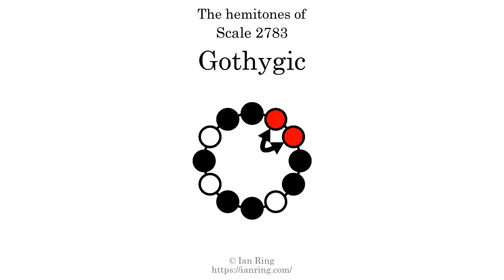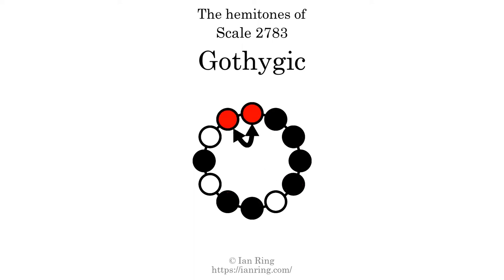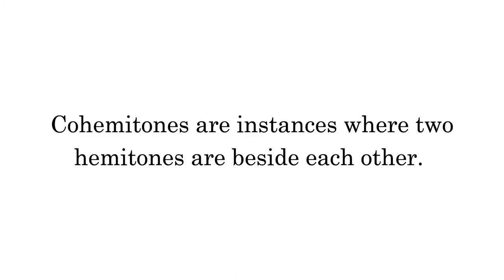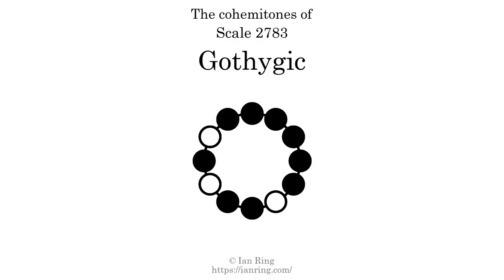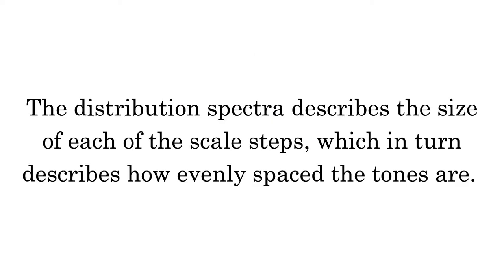The hemitones are at positions here, here, here, here, and here. Co-hemitones are instances where two hemitones are beside each other. This scale has four co-hemitones, at positions here, here, here, and here.